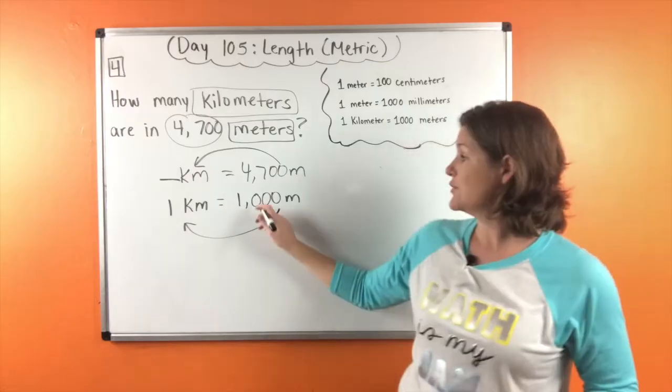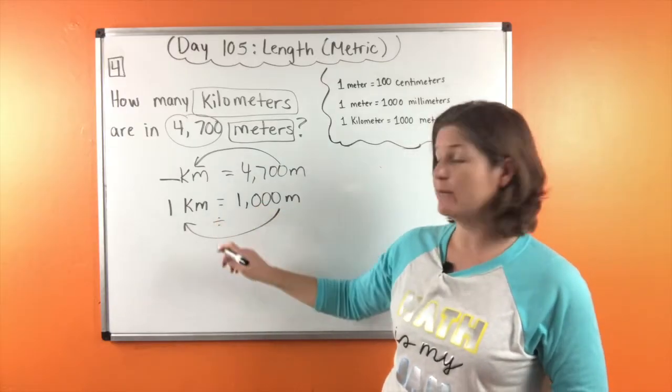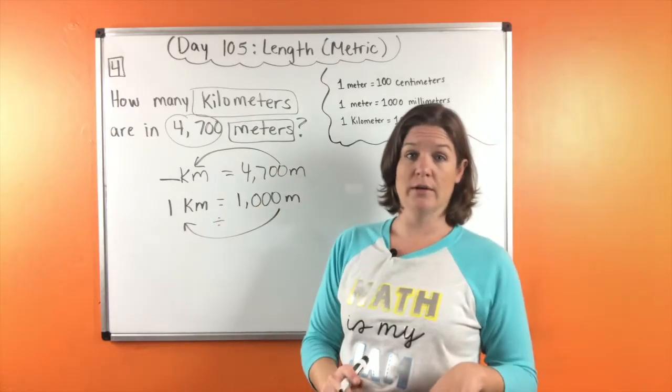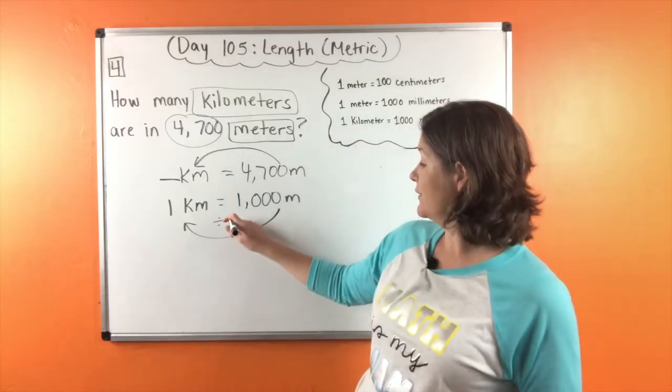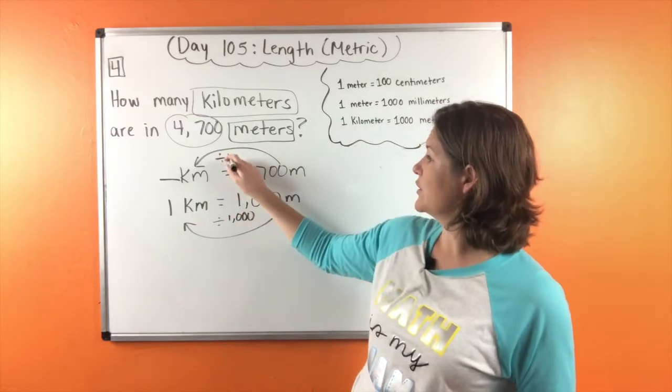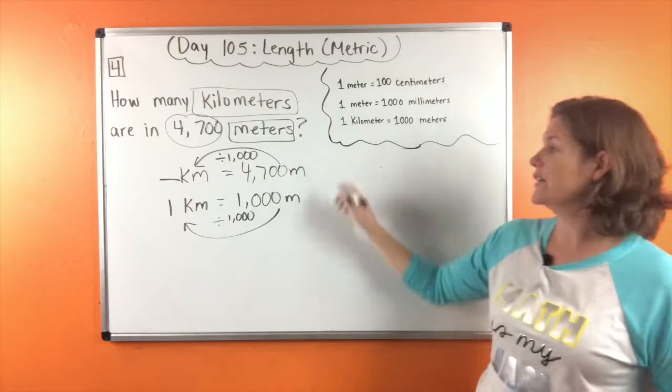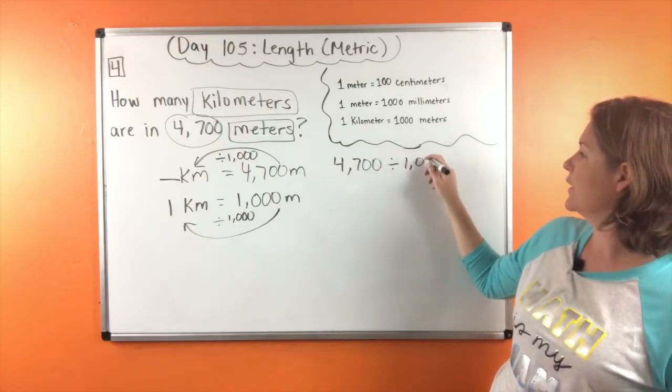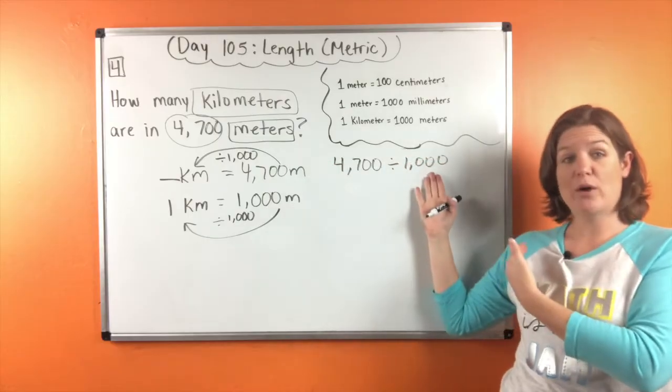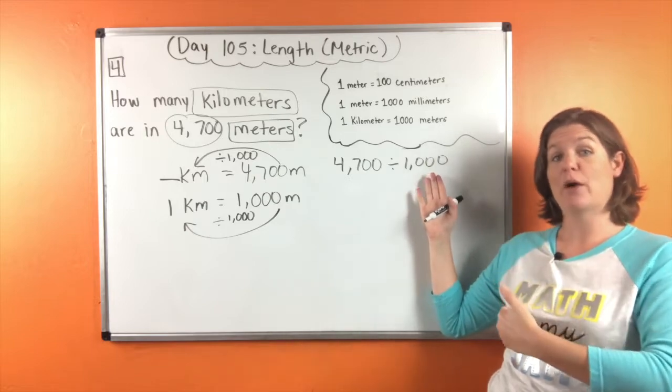So 1,000 divided by what will give us 1? 1,000. So now we're going to do the same thing on top: 4,700 divided by 1,000. Because this is a power of 10, 1,000 is 10 to the power of 3, right? Three zeros. So 3 would be the exponent.